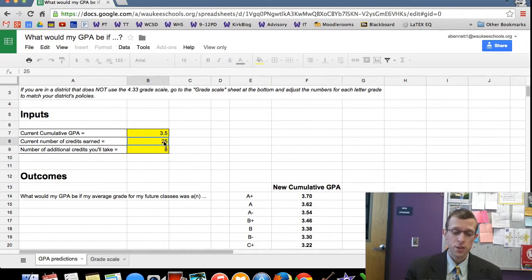The stuff that you're going to enter is in yellow. So that's your current GPA, or your student's current GPA, and how many credits they've already taken. And then this next box is how many additional credits they're going to have.